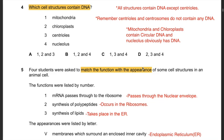Question 4: Which cell structures contain DNA? All listed structures contain DNA except centrioles. Centrioles and centrosomes do not contain any DNA. Mitochondria and chloroplasts contain circular DNA, and the nucleolus obviously has DNA. Hence the answer is B: 1, 2, and 4.